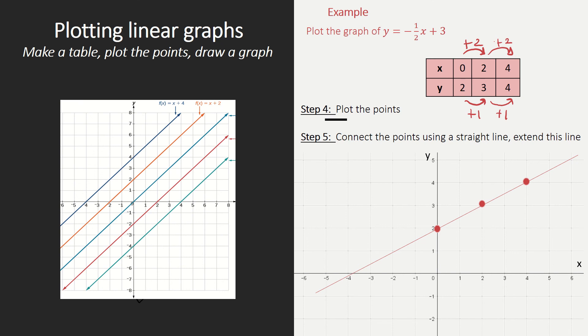Important is that when you have multiple graphs in one set of axes, you must label your graph. That means that you must write down on your graph y equals minus a half x plus three. Then you're completely done.